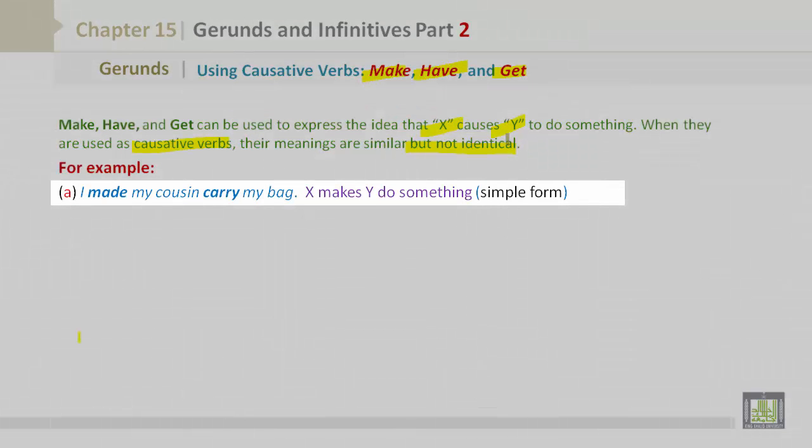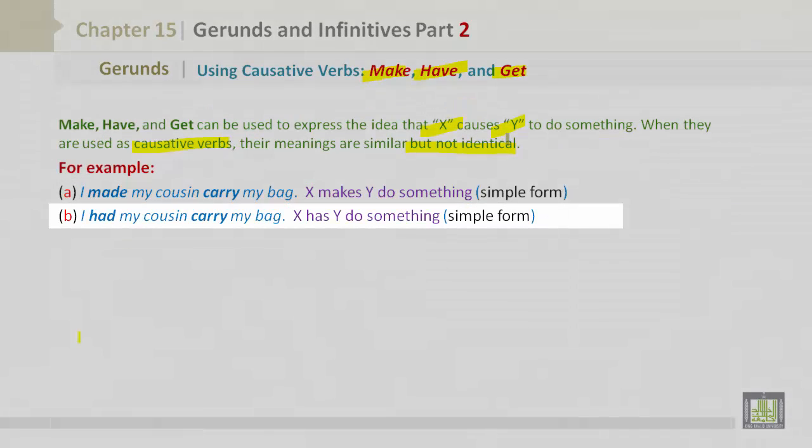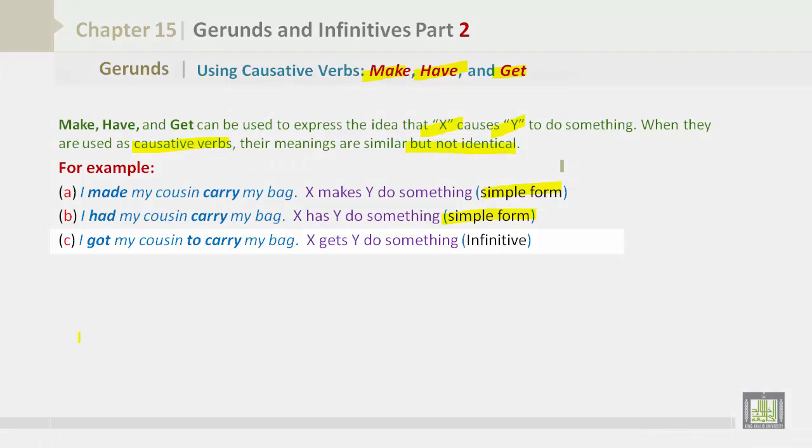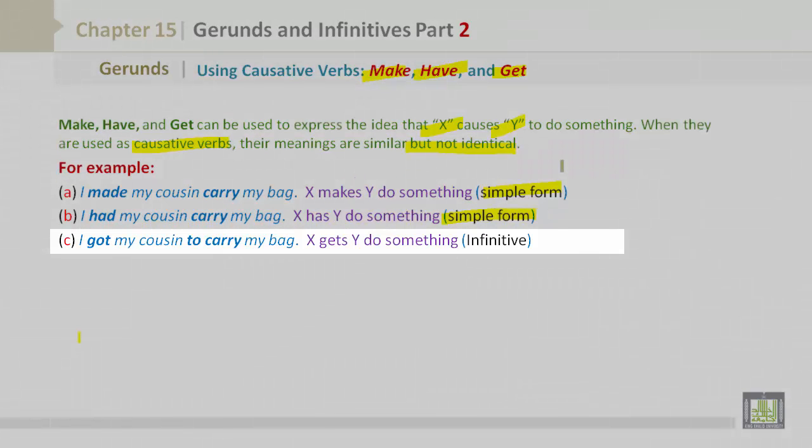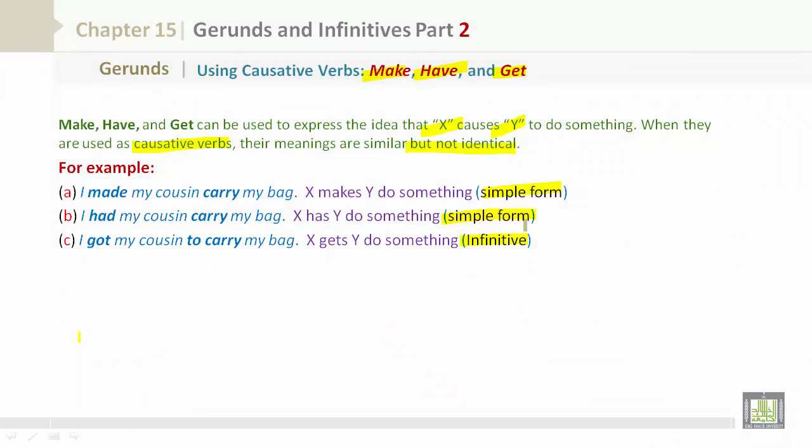For example: I made my cousin carry my bag. X makes Y do something in simple form. I had my cousin carry my bag. X has Y do something. Both of these are examples of the simple form. I got my cousin to carry my bag. X gets Y to do something. This is the infinitive.